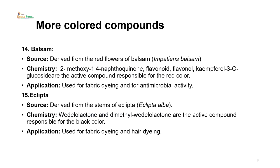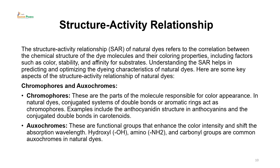Fourteenth is balsam, derived from the red flowers of Impatiens balsamina. Its chemistry shows 2-methoxy-1,4-naphthaquinone, flavonoids, flavanols, kaempferol and 3-O-glucosidase as active compounds responsible for red color. It is used for fabric dyeing and has antimicrobial activity. Fifteenth is eclipta, derived from the stems of Eclipta alba. It has compounds like wedelolactone and dimethyl wedelolactone — active compounds responsible for black color — used for fabric dyeing as well as hair dyeing.